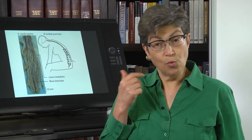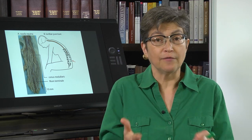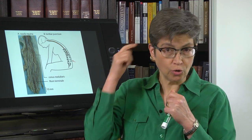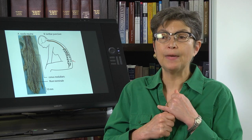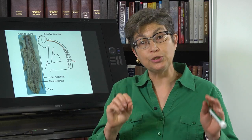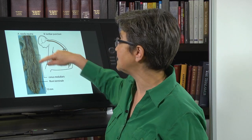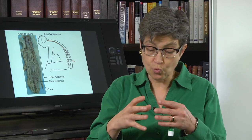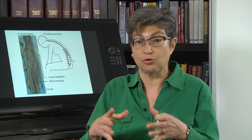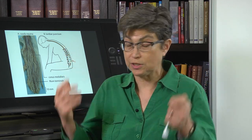Let's say that you suspect a person has an infection in the central nervous system and you want to gain access to the fluid of the central nervous system. We don't want to drain a hole in the cranium, and we certainly don't want to risk injuring the spinal cord. So what we do is go into this area, the cauda equina. What's in the cauda equina? These roots plus CSF — it's actually a cistern, a place where CSF collects, called the lumbar cistern.